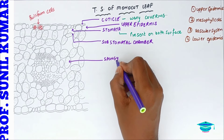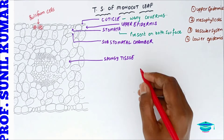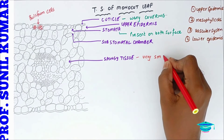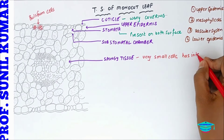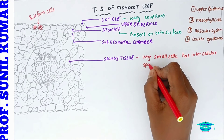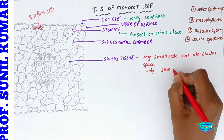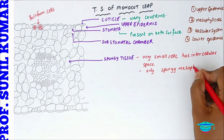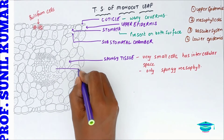The mesophyll cells that we have form the spongy tissue. When we talk about spongy tissue, we need to understand that they are very small cells and they have intercellular spaces present between them. The spongy tissues are only present in Monocot — they don't have palisade mesophyll.